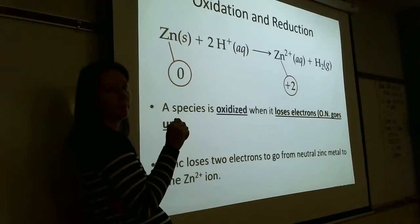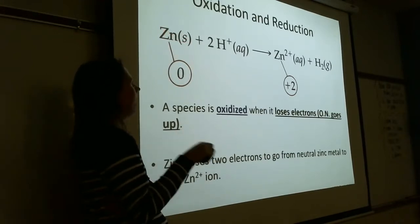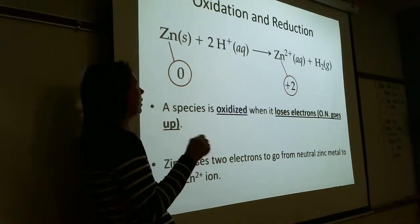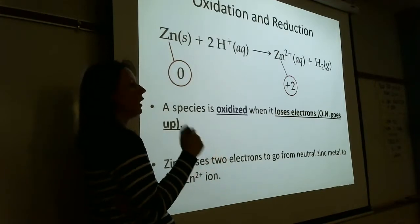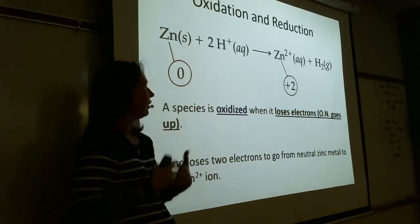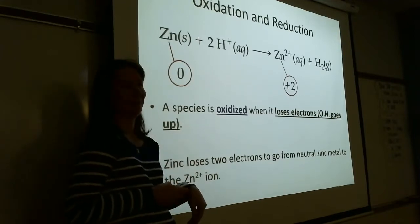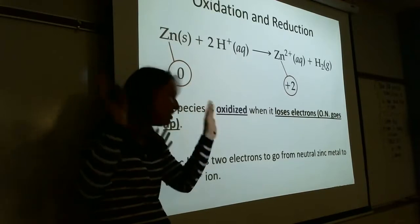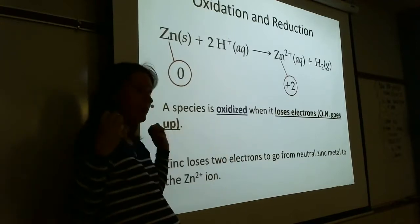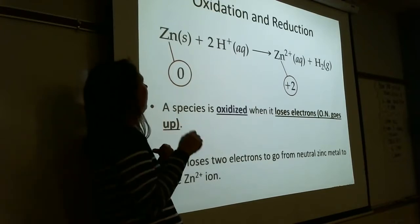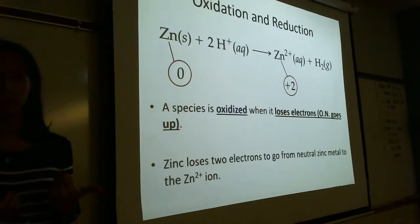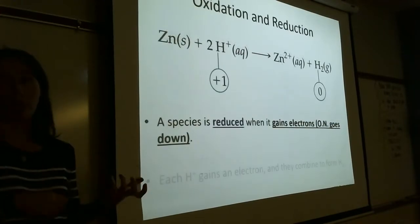If you get reduced, you're the oxidizing agent — you're allowing someone else to get oxidized. If you get oxidized, you're the reducing agent — allowing someone else to get reduced. You can't have two oxidations or two reductions in the same reaction. If your before-and-after shows two oxidations, go back and check your numbers.